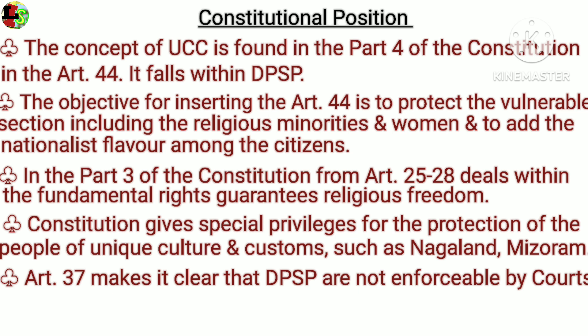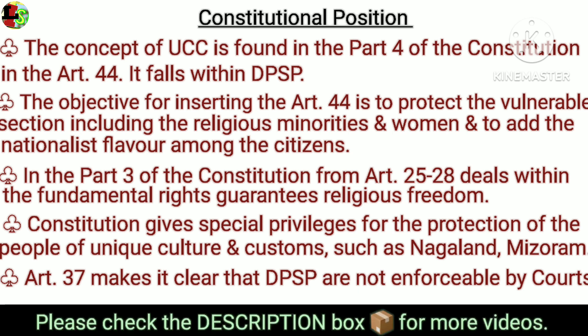The concept of the Uniform Civil Code is found in Part 4 of the Constitution under Article 44, and falls under the Concurrent List. It is part of the Directive Principles of State Policy. The objective behind inserting this article is to protect vulnerable sections including religious minorities and women, and to strengthen the nationalist sentiment among citizens, in turn instilling a sense of unity.